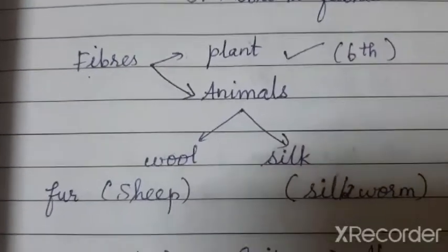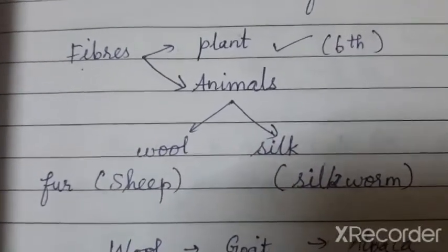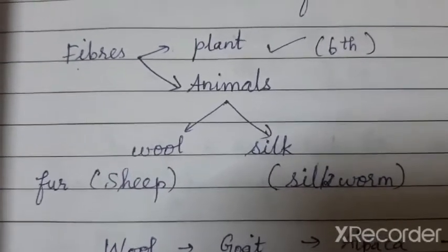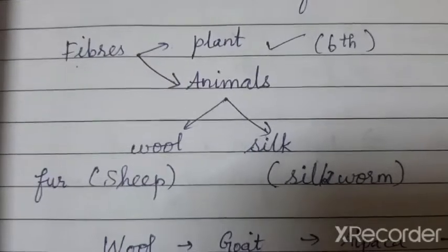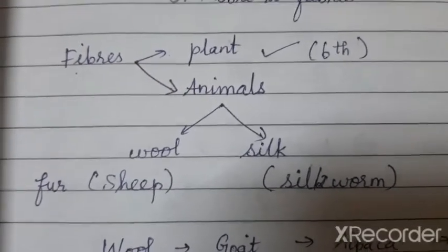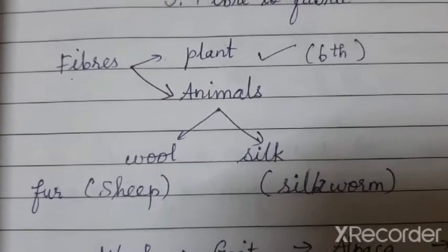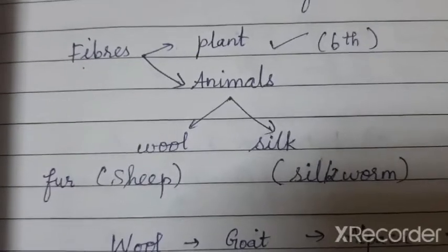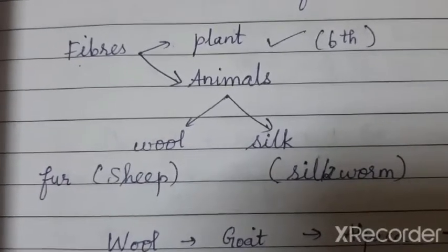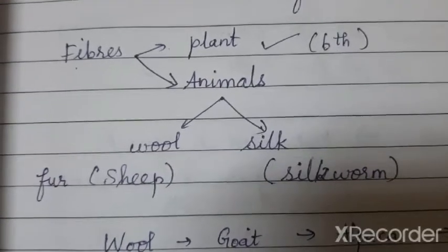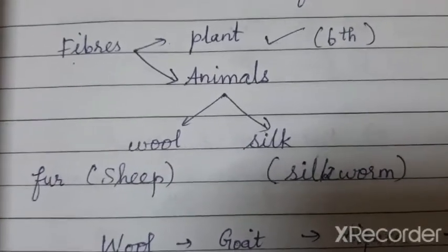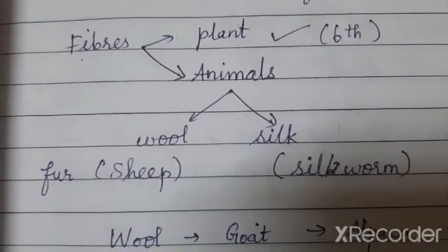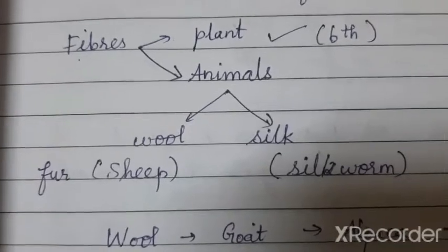These fibers are of two types: natural fibers and artificial fibers. Natural fibers include cotton, jute, wool, and silk. Artificial fibers include polyester, nylon, and acrylic. Natural fibers are again from two sources: plant sources and animal sources. Plant fibers are cotton and jute, obtained from plants. Animal fibers are wool and silk, obtained from animals.